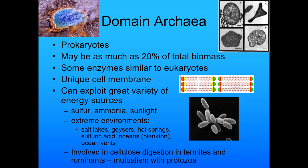When we look at the domain archaea, they're prokaryotes, and they may be as much as 20% of the total biomass of the earth. They have some enzymes similar to eukaryotes and a lot of unique cell membranes. They're also called extremophiles — they live in very extreme environments and can exploit a variety of energy sources: sulfur, ammonia, sunlight, and some of them use arsenic for energy. They're also involved in a mutualistic relationship with protozoans in the cellulose digestion in termites and in ruminants like cows.